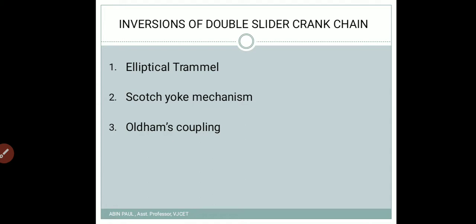We will see some of the important inversions of double slider crank chain. The first one is the elliptical trammel, the second one is the Scotch yoke mechanism, and the third one is the Oldham coupling. You will see how these mechanisms work and what their uses are.